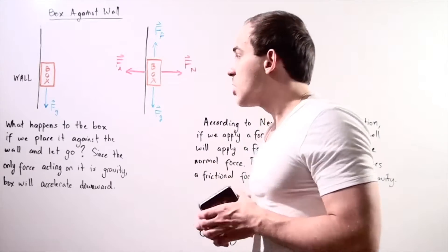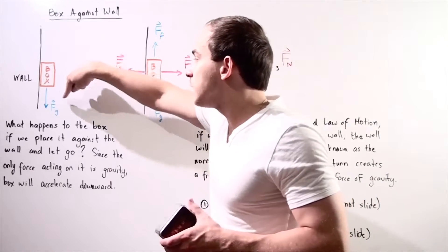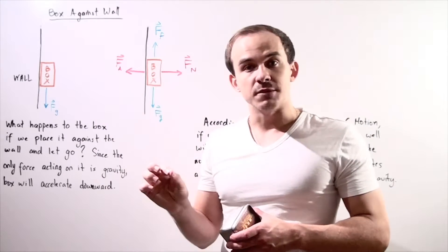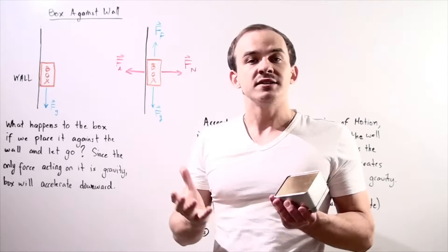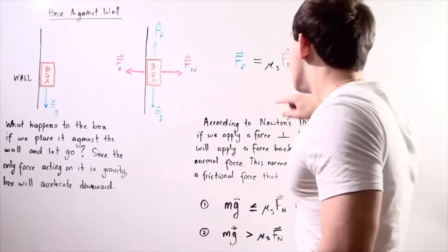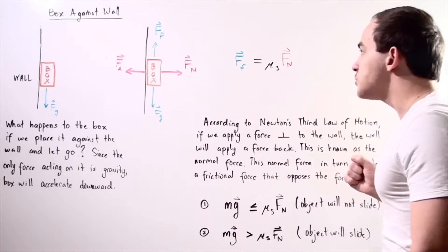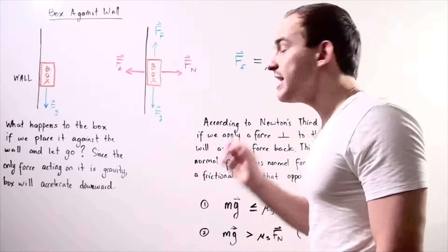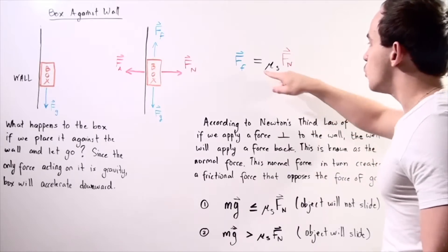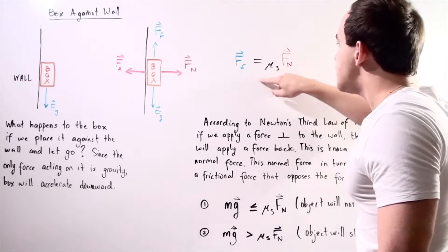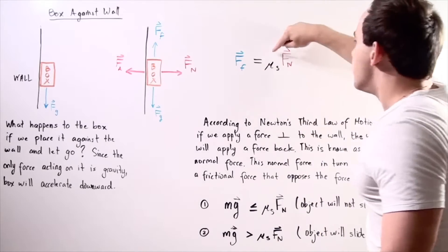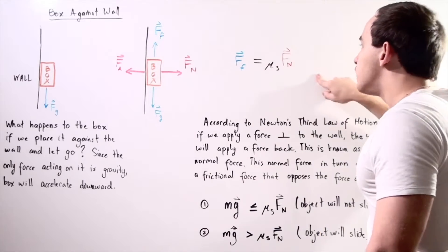What opposes the force of gravity? It's the force of friction. But where does friction come from? The maximum static force of friction is equal to the coefficient of static friction multiplied by the normal force.